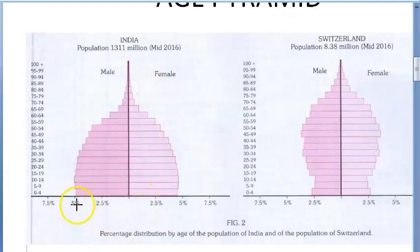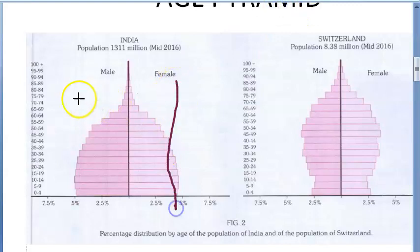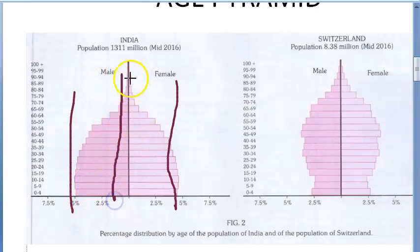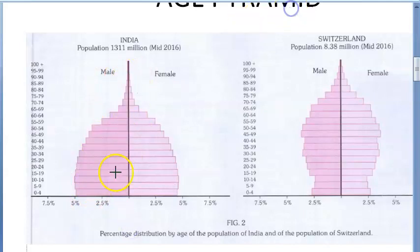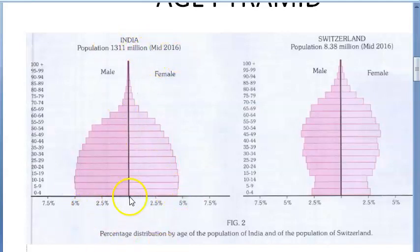The x-axis shows percentage — around five percent. You can see the old population is literally less than one percent, while most of the population is very young. This is India around mid-2016 — young people are a lot.